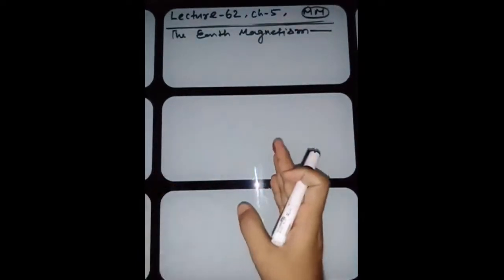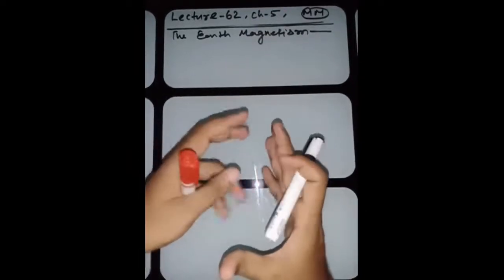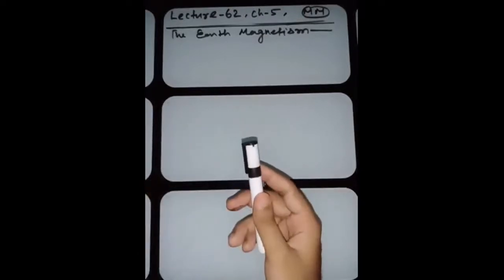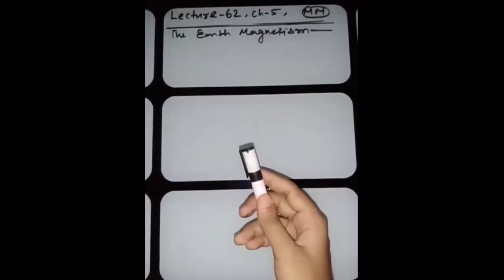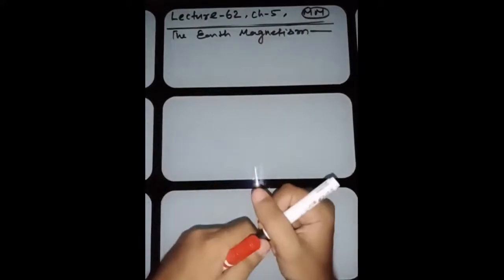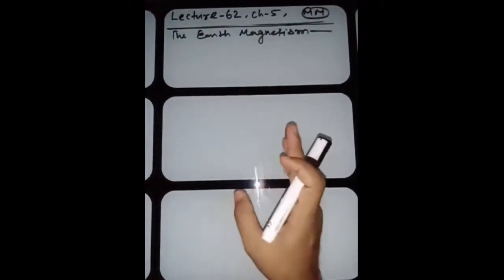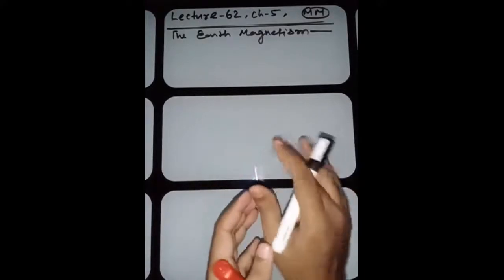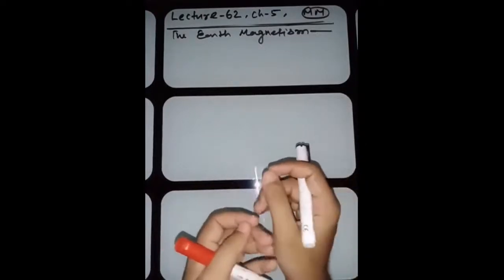The magnetic field lines of earth resemble that of a magnetic dipole located at the center of the earth. The axis of this dipole does not coincide with the axis of rotation of the earth - it is presently tilted by 11.3 degrees.